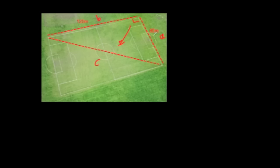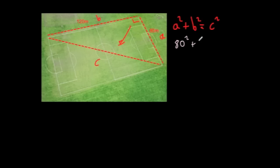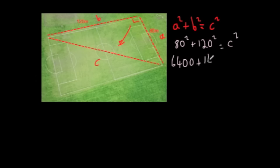Remember, it doesn't really matter which way you label A and B, but they have to be the two shorter sides. We write Pythagoras' theorem: A squared plus B squared equals C squared. Substituting in the numbers: 80 squared plus 120 squared equals C squared. 80 squared is 6400, and 120 squared is 14400, so 6400 plus 14400 equals C squared. Adding those together gives 20,800 equals C squared.